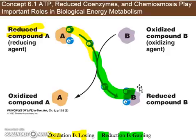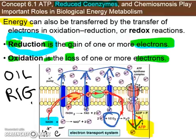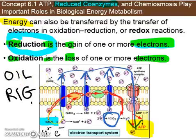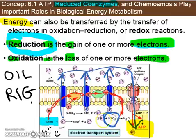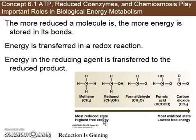In this picture, the NAD was being oxidized — remember oil rig, oxidation is losing, this is being oxidized. And then our oxygen — reduction is gaining — is being reduced. Oxygen is our final electron acceptor of cellular respiration.